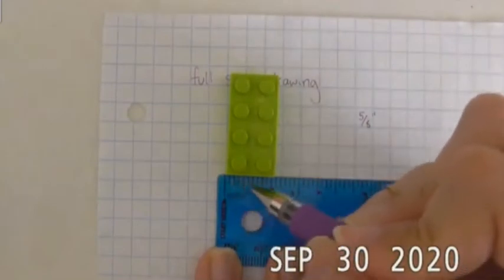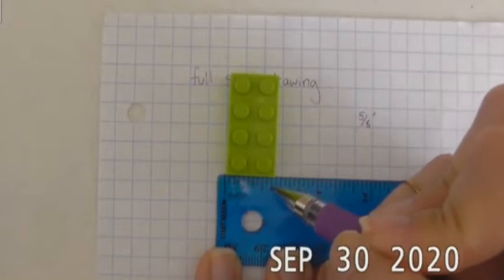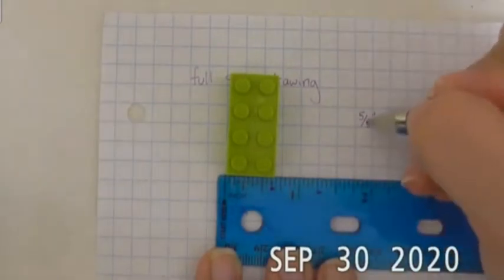For those of you who said five eighths inch you are exactly correct. We can count this out starting from the zero line: one, two, three, four, five, six, seven, eight, nine, ten sixteenths. Which we recognize is an improper fraction so we got to reduce it and that becomes five eighths of an inch.